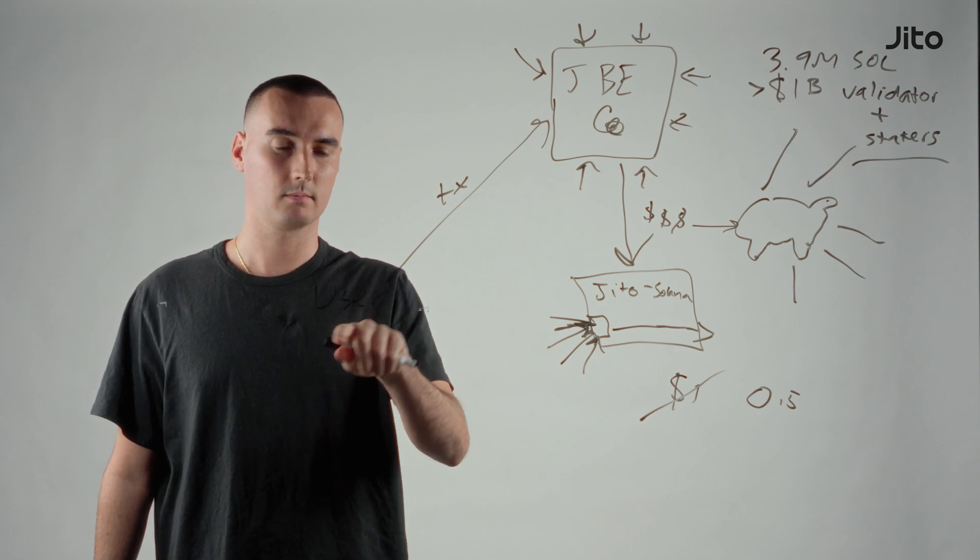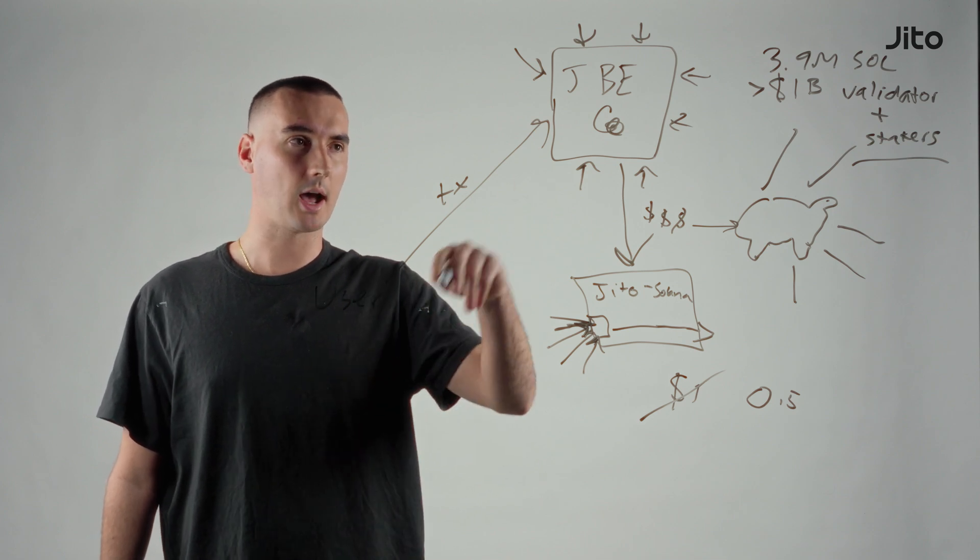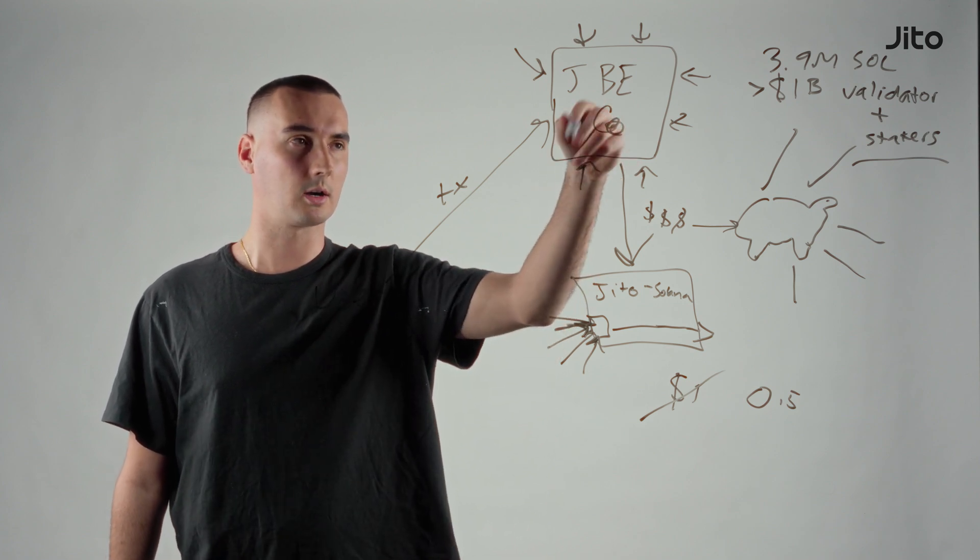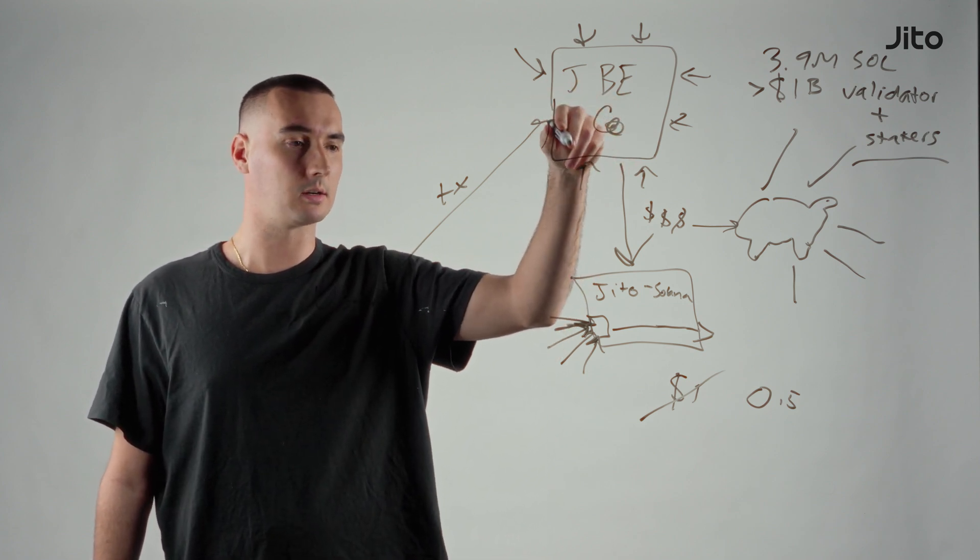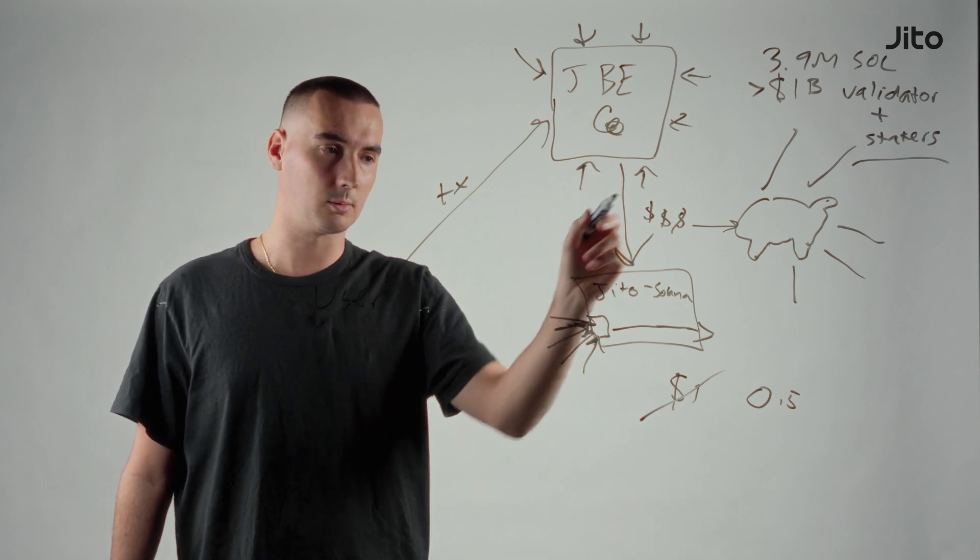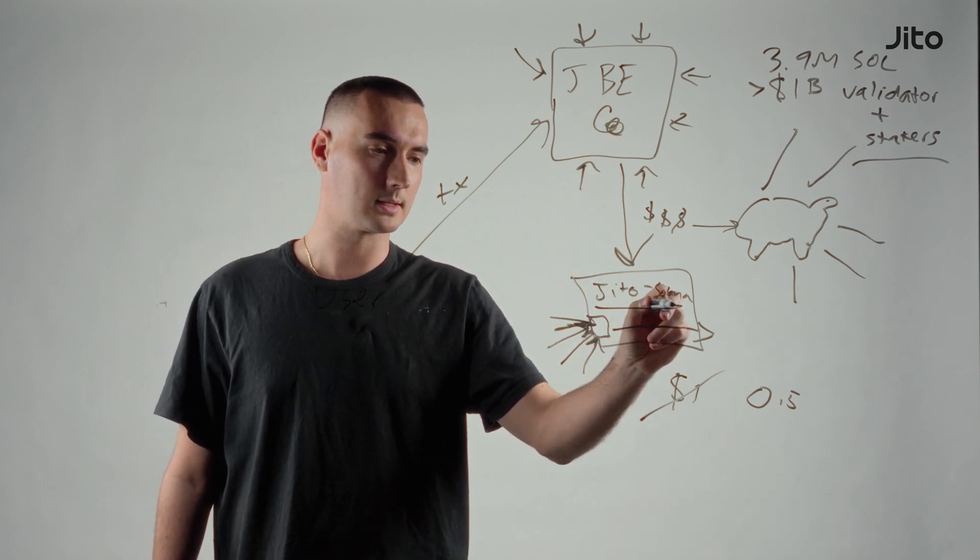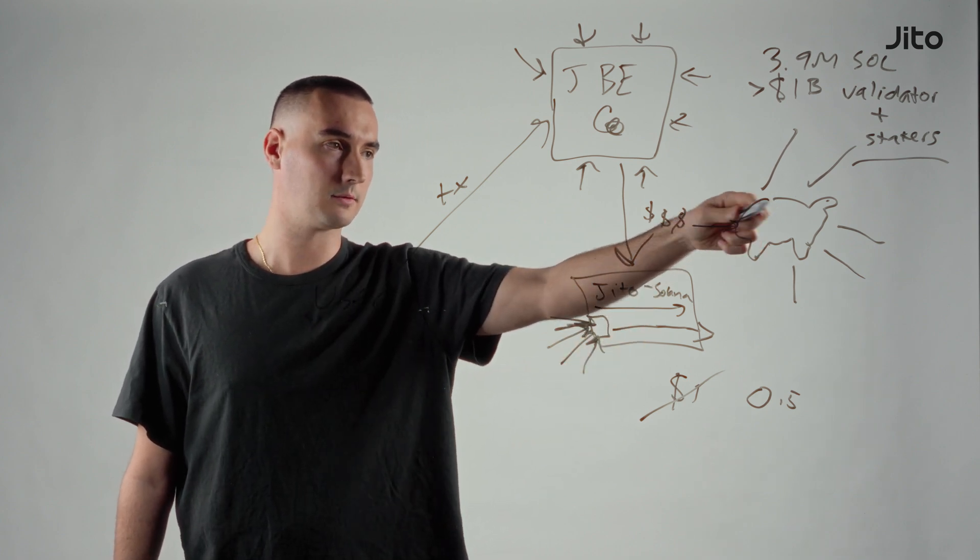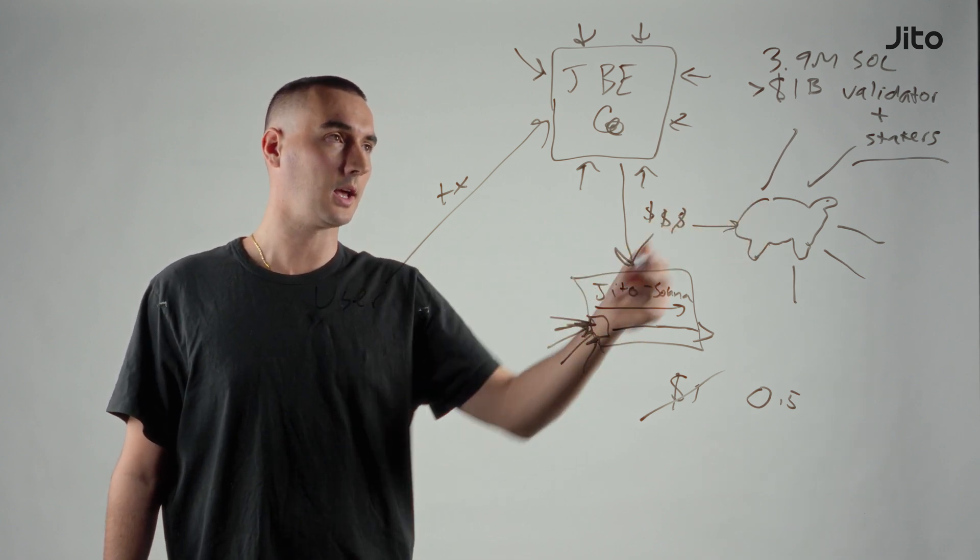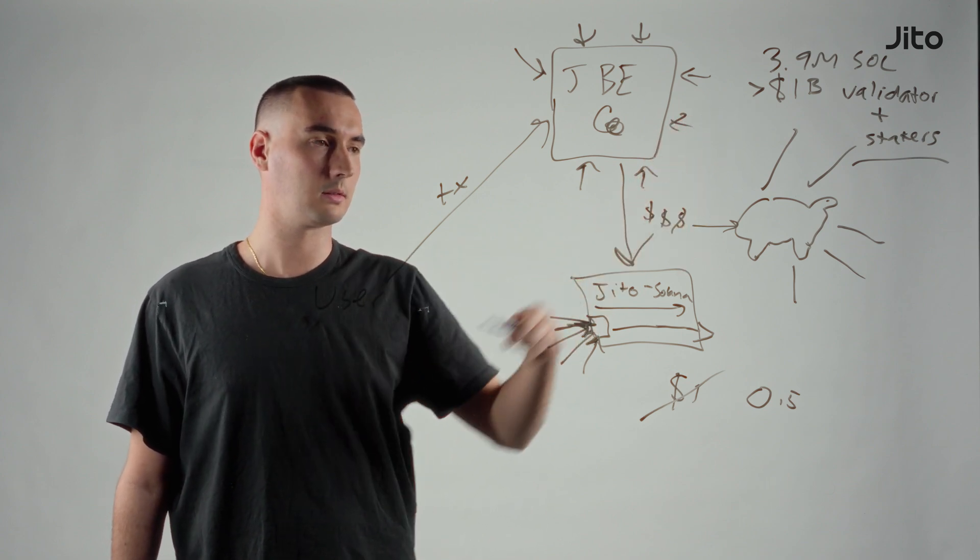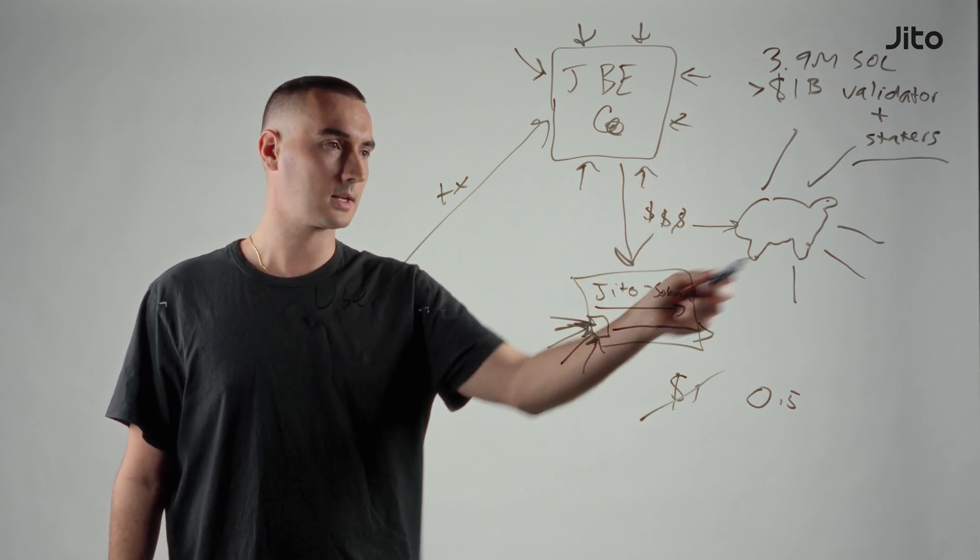I kind of went through Jito tips and how those work. To recap, you have your user, they can send high priority transactions to the Jito block engine. This runs an auction which tries to make validators and stakers as much money as possible and it will forward the most profitable trades to validators. They will process it fast, the money flows to those tips, flow to a piggy bank, and today there's been over a billion dollars that's flowed to stakers.